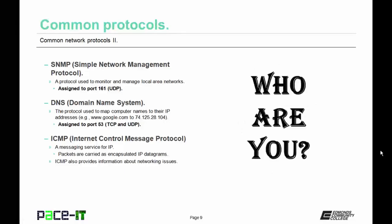Then there's DNS, Domain Name System. This is the protocol that's used to map computer names to their IP addresses. It's assigned to port 53 by default, and it can use TCP or UDP as its transport layer protocol.